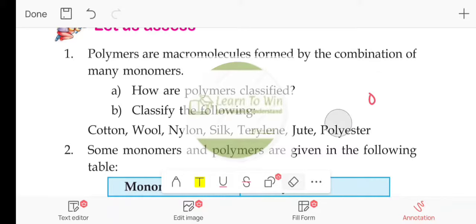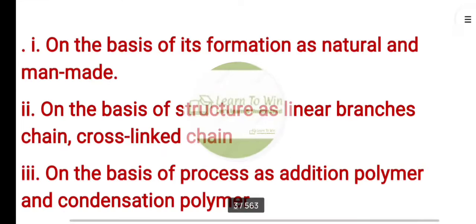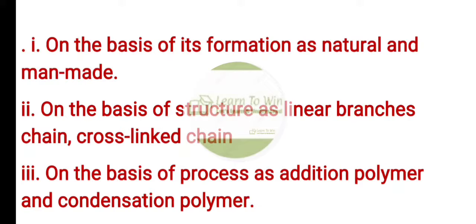How are polymers classified? Generally, we classify polymers on the basis of formation as natural and man-made polymers. On the basis of structure, we divide into linear branched chain and cross-linked chain.